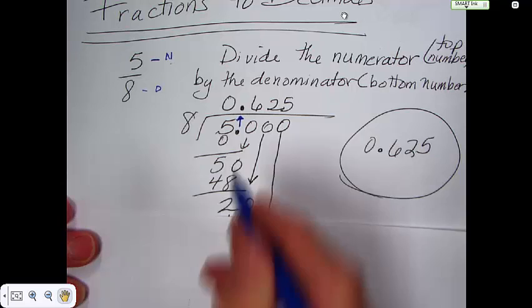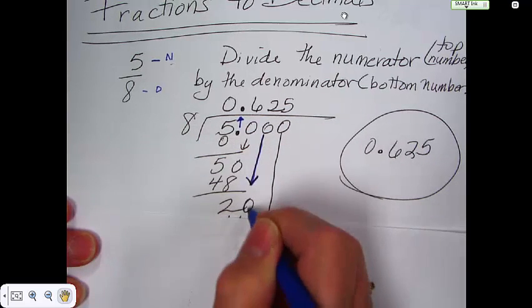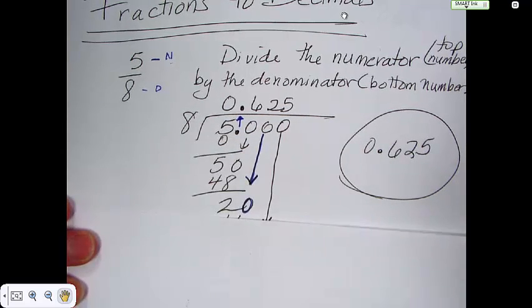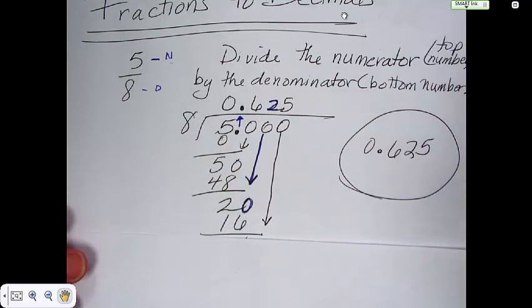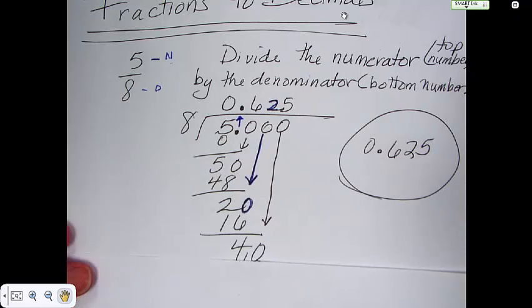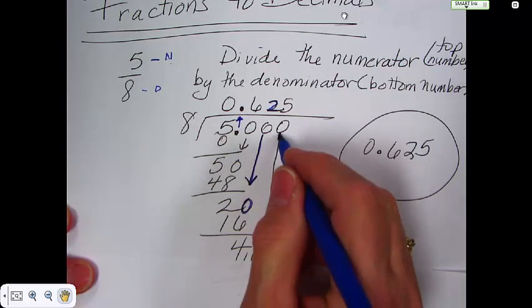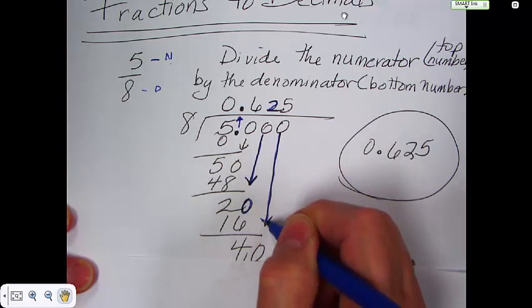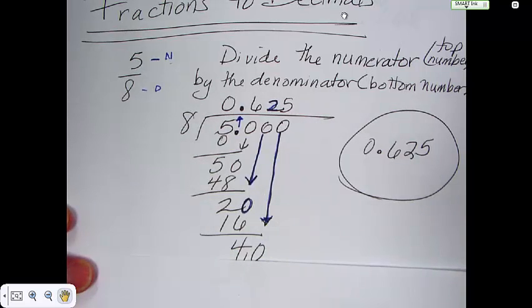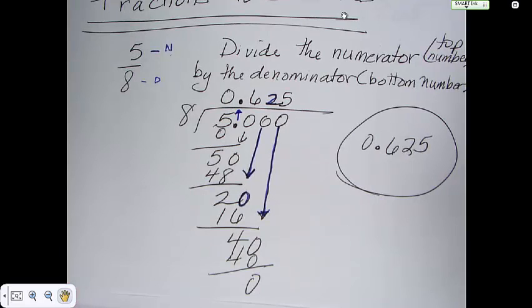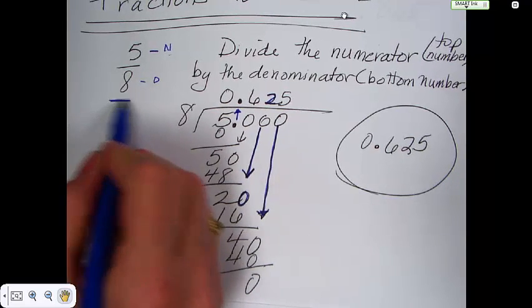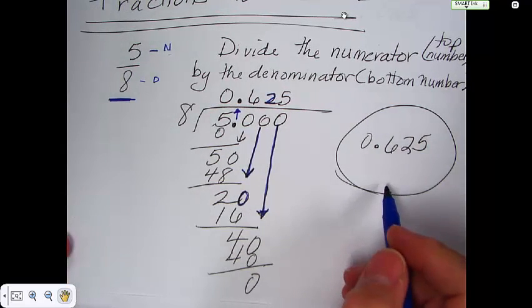You're going to need another 0. So you bring it down. Now you've got 20. 8 goes into 20, 2 times. And that would be 16. You subtract. You get 4. Bring down another 0. 8 goes into 40, 5 times. Put 40 here. Subtract. And you've got 0.